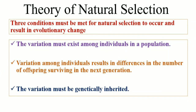First, variations must exist among individuals in a population. For a particular trait, there must be variations among the individuals present in a population. If variations are not present, nature cannot favor some individuals over others — there is no variation, there is no natural selection.